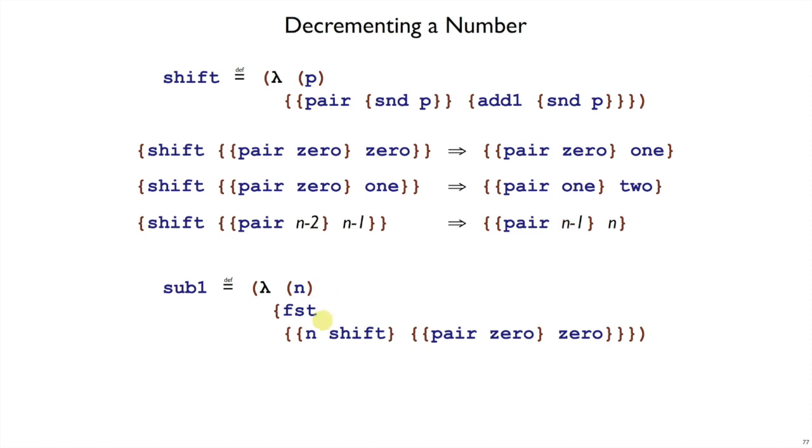So, we take a number n, and we want to n times use the shift operation on the pair 0, 0, and then we throw away whatever we get on the second part and just keep the first part. That'll implement sub1.